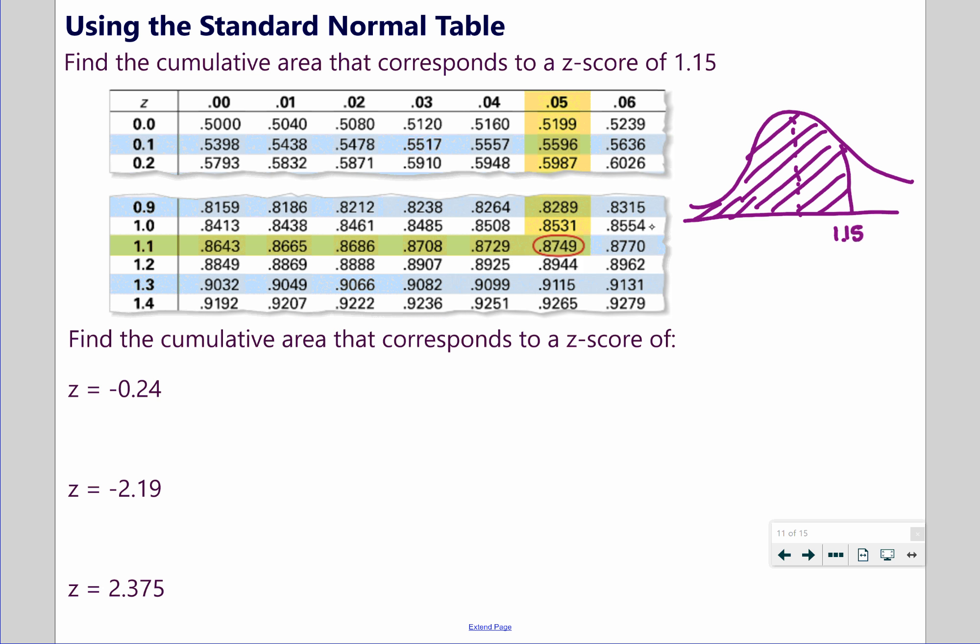Let's do the next one: negative 0.24. So on your table, go to the negative values, negative 0.24. So you're going to find negative 0.2 on the left, and then go over to 0.04, you should get 0.4052. The next one is negative 2.19. So again, you're on the negative side of your chart, find negative 2.1, and then go all the way over to 9, your first column actually, 0.0143 you should find for that one.